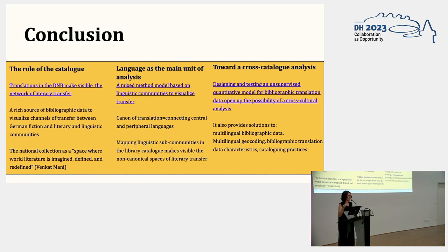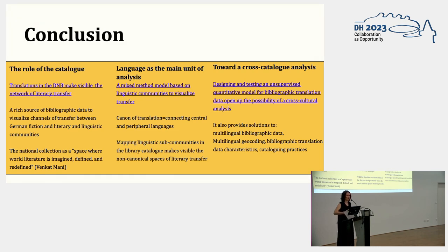The importance of smaller networks of literary transfer can also be well examined. Thirdly, designing and testing an unsupervised quantitative model for bibliographic translation data opens up the possibility of a cross-catalog analysis. My work also addresses many technical smaller challenges — for instance, for multilingual bibliographic data, translations are multilingual by nature, and especially for geocoding different place names in 90-plus languages, that's a major challenge. Cataloguing practices are also a huge issue I hope to document as I continue working on this project. My long-term aim is to test my model on other catalog data, such as the Austrian National Library Catalog or the BNQ in Quebec, and to build tools for cross-catalog analysis of translation.